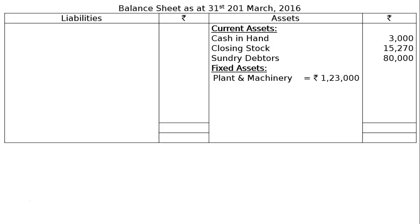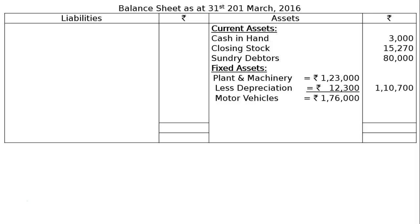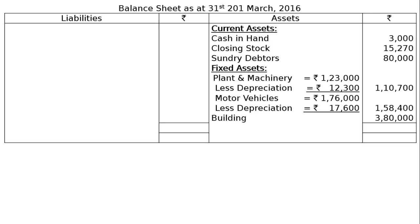Under fixed assets: plant and machinery rupees 1,23,000 less depreciation 10 percent rupees 12,300, giving rupees 1,10,700 in the final column. Motor vehicles rupees 1,76,000 less depreciation 10 percent rupees 17,600, giving rupees 1,58,400. Building rupees 3,80,000. Total assets: rupees 7,47,370.